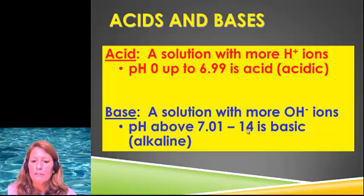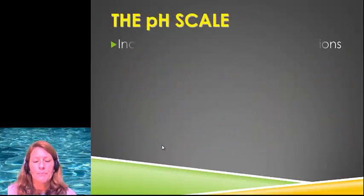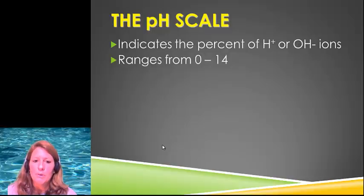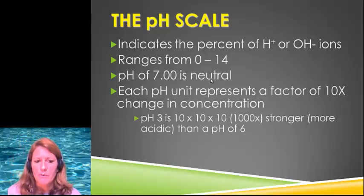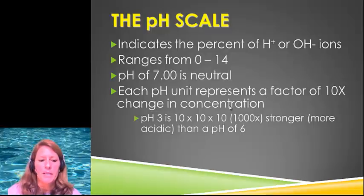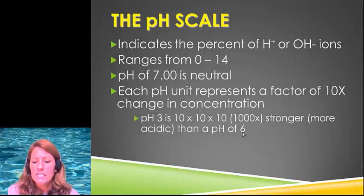So the scale is anything that ranges between zero and 14, and it's really a percentage of more hydrogen or more hydroxide ions. And pH of seven is neutral. Now each pH unit, so that would be the one, two, three, four, is really a factor of 10 times the change in the concentration. So what does that mean, okay? So if I have a pH of three and I have a pH of six, we know that three is more acidic than six. But how much more acidic or how stronger? Well, if it's a factor of 10, if I go up from three to six, that's going up three factors, okay. So that would be equivalent to 10 times 10 times 10. So that means that pH of three is a thousand times stronger or a thousand times more acidic than a pH of six.